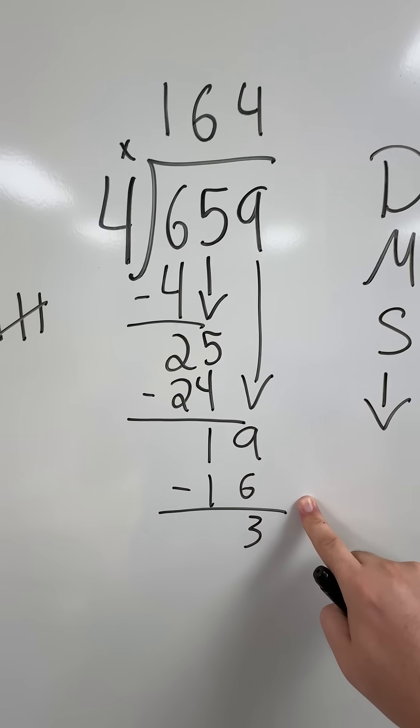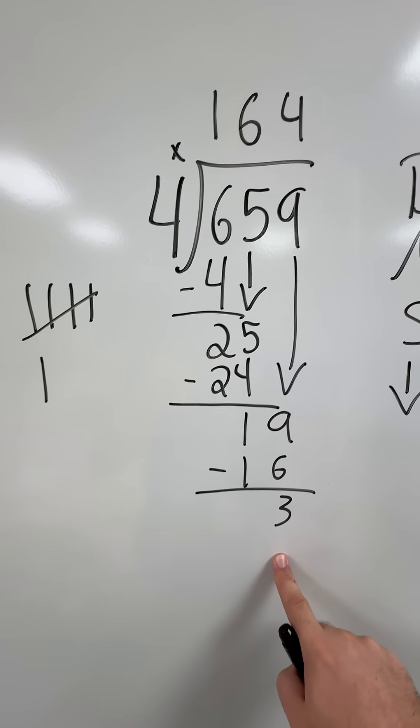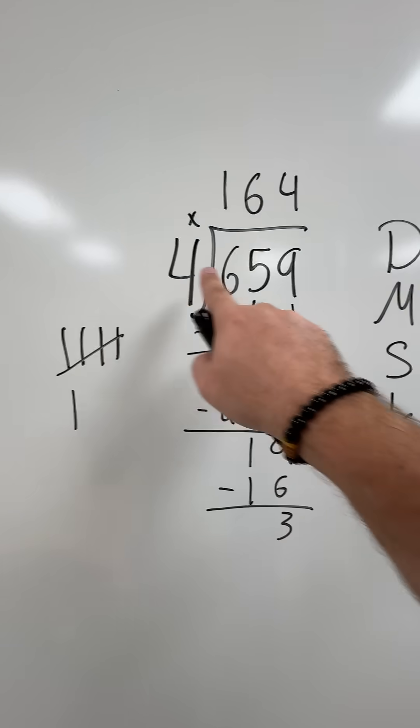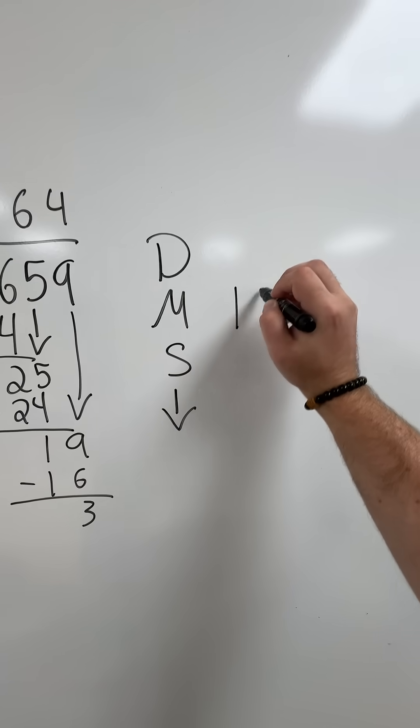I have no more numbers to bring down. I also know that 4 cannot go into 3. So I know that 4 can go into 659 a total of 164 times.